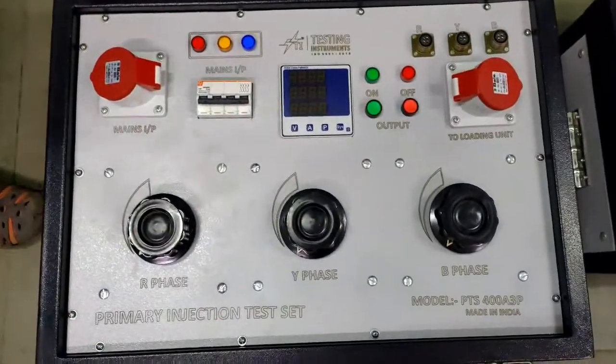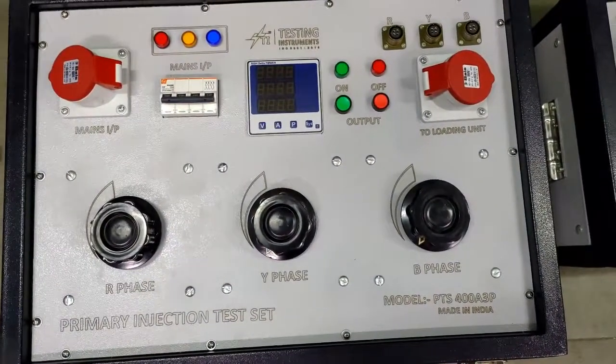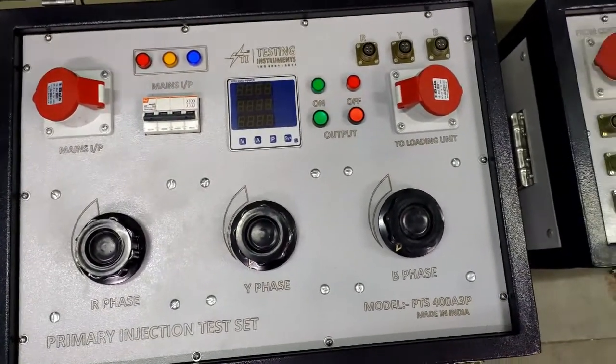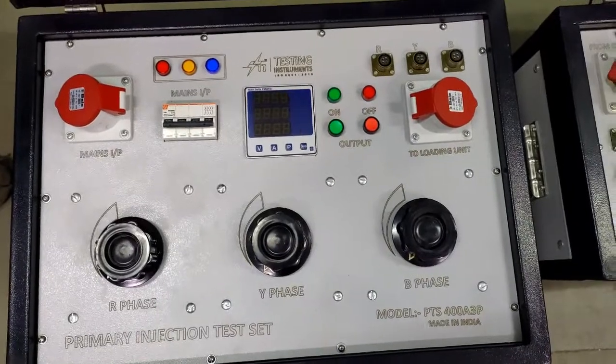Now you can see why we call it unbalanced type. Because it is 3-phase but all 3 phases can be individually controlled without interrupting other phases.